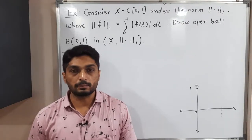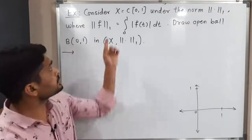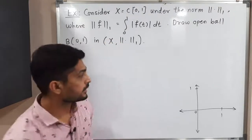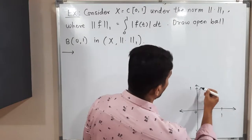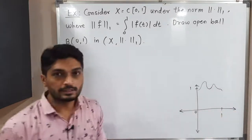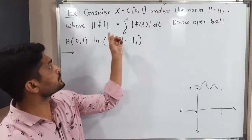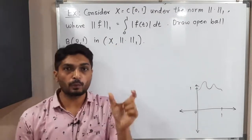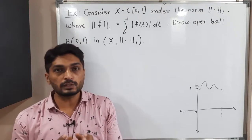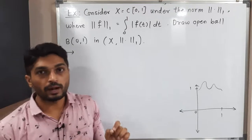Let us discuss this example. We have X, which is a set of all continuous functions defined on the closed interval [0,1]. The norm-1 is defined as the integration from 0 to 1 of |f(t)| dt. With the help of this norm-1, we have to find an open ball with center 0 and radius 1.